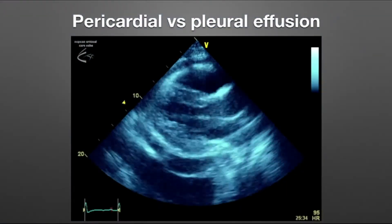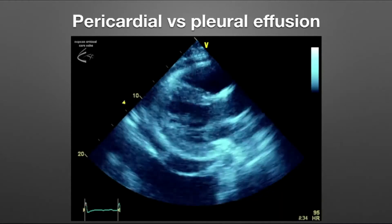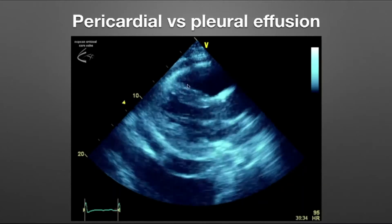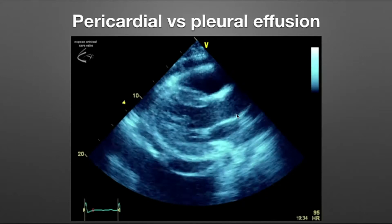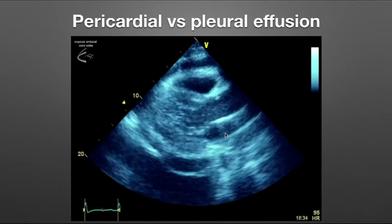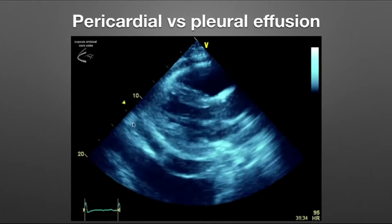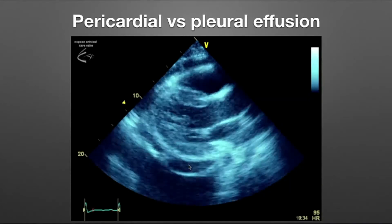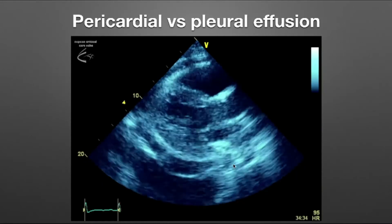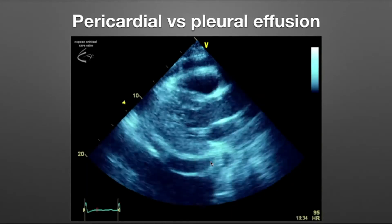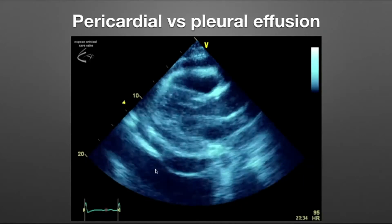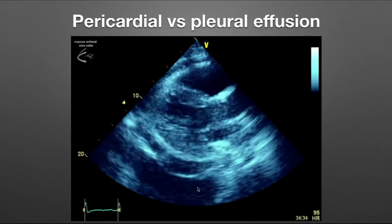This is an example of both a pericardial and a pleural effusion in the parasternal long axis view. We have the right ventricle, left ventricle, LVOT going up into the ascending aorta through the aortic valve, the mitral valve, and the left atrium. We can see the pericardium line and pericardial fluid in front of it. Looking at the circular descending aorta sitting behind the heart — in front of it we have the pericardial effusion, and posterior to the descending aorta, we have the pleural effusion.